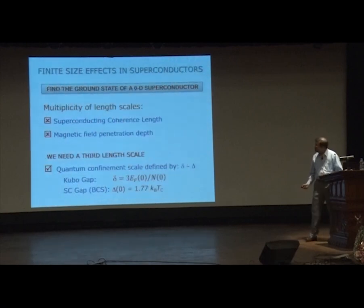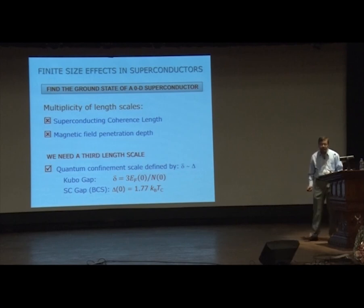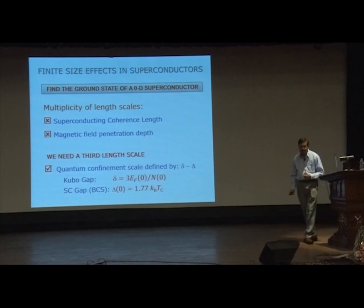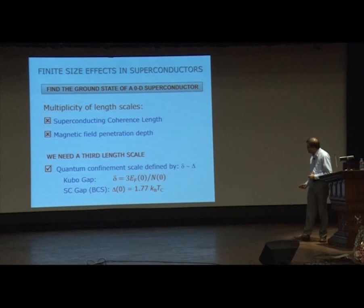We need a third length scale — the two previous ones are useless. The third length scale is set by quantum confinement. The Kubo gap delta is the inter-level spacing in small particles, and the capital delta is the superconducting energy gap that opens up at the Fermi level as you go from higher to lower temperatures, because electrons condense and form Cooper pairs. The BCS gap is given by approximately 1.77 × kB × TC.